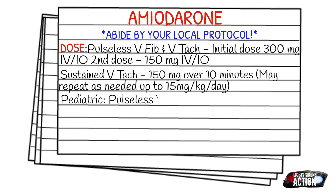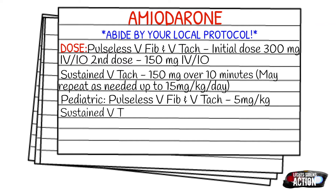Your pediatric dose for pulseless V-fib or V-tac is 5 milligrams per kilogram. For sustained V-tac or V-tac with a pulse, it's 5 milligrams per kilogram over 20 to 60 minutes, and you can repeat this up to twice.